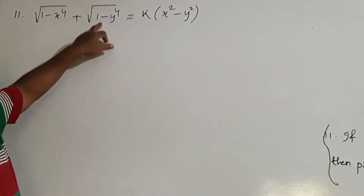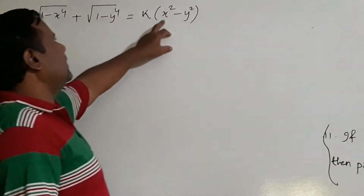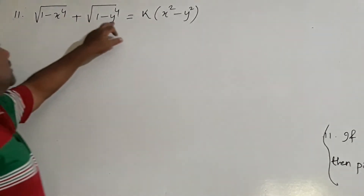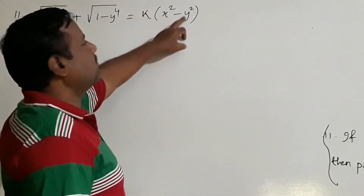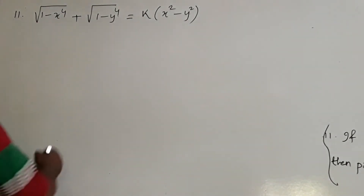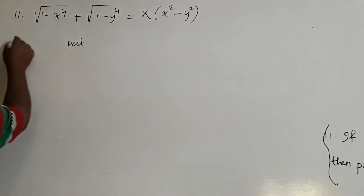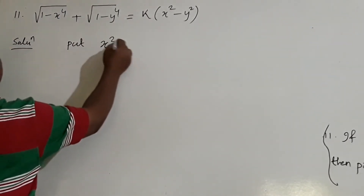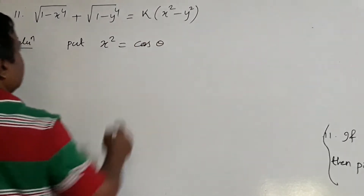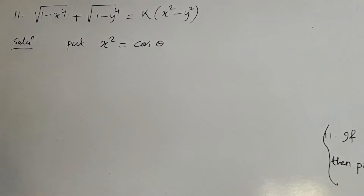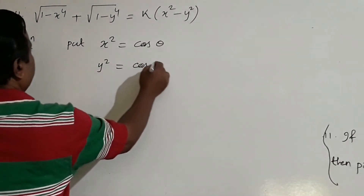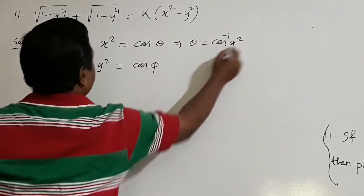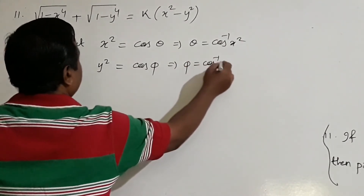There is another problem: √(1 − x⁶) + √(1 − y⁶) = k(x³ − y³). Similarly, problems may come with exponents 8 and 4th powers. For the solution, put x² = cos θ and y² = cos φ. Then θ = cos⁻¹(x²) and φ = cos⁻¹(y²).